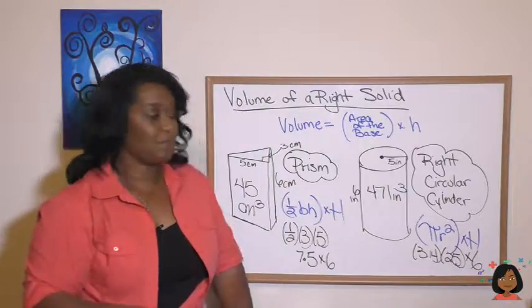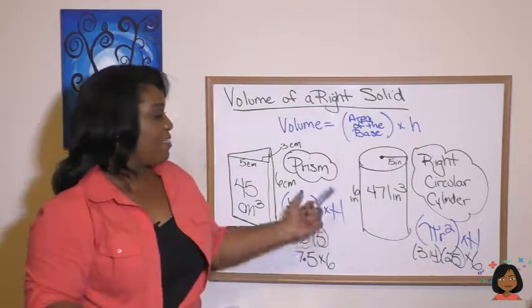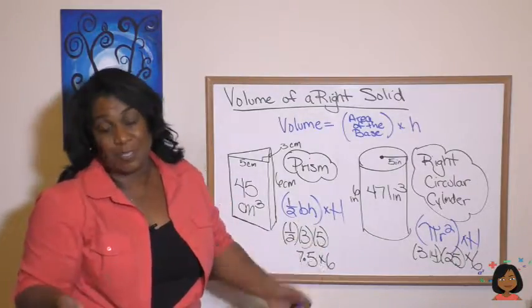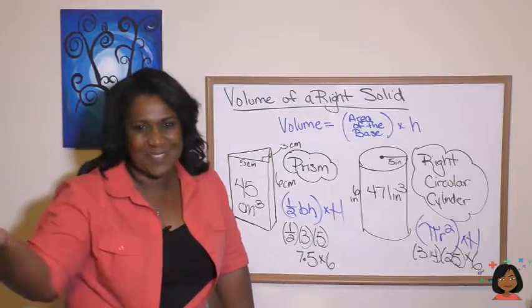So if it's a triangle, you use that formula. If it's a circle, you use that formula. As long as you can remember those formulas, this one is pretty easy. You just multiply that area of the base times the height.